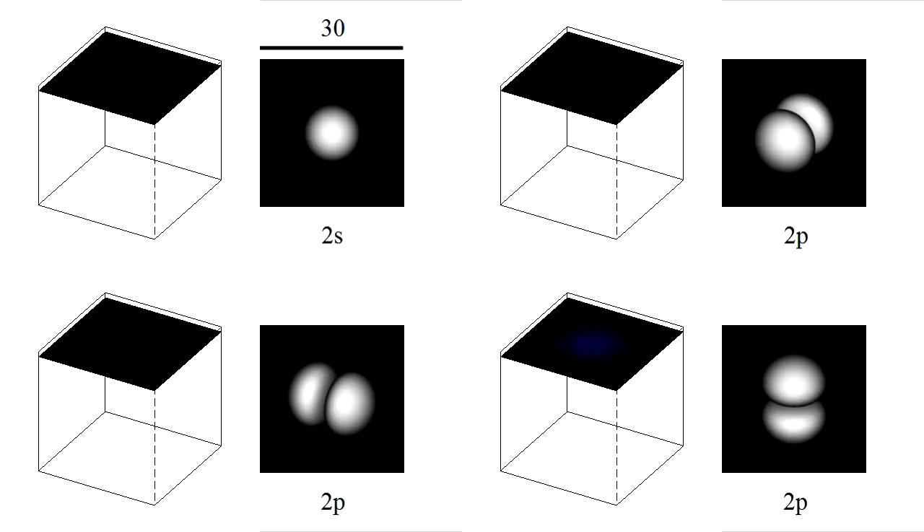The 2s orbital is larger than the 1s orbital, and it consists of two concentric spherical lobes. The two p orbitals are rotated versions of the same two-lobe structure.